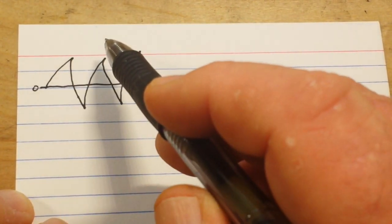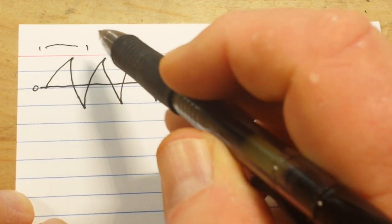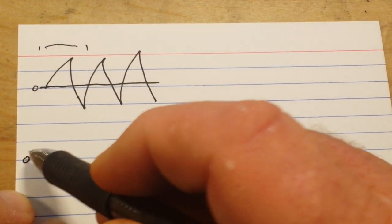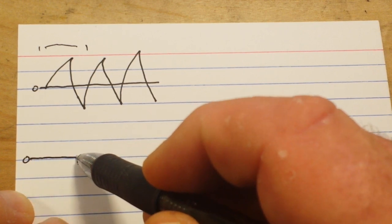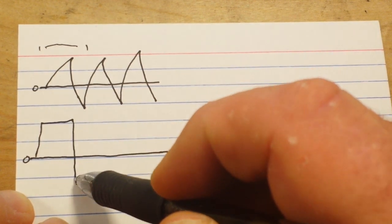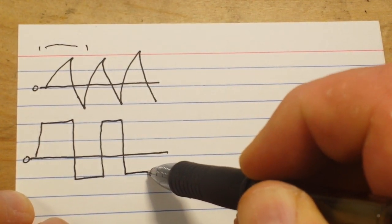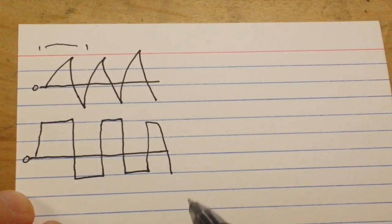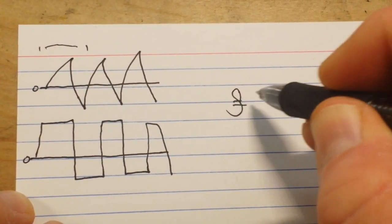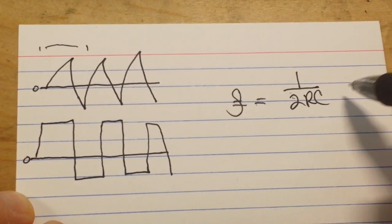The rate of this charging and discharging is controlled by the resistor. Now by creating that hysteresis in there with that voltage divider and the Schmidt trigger, we're taking that sawtooth waveform pattern and we're transforming it into a square wave, the frequency of which is equal to the inverse of 2 times RC.